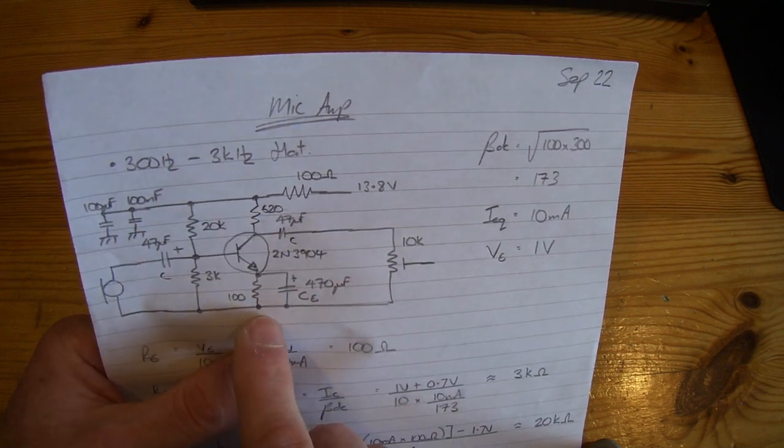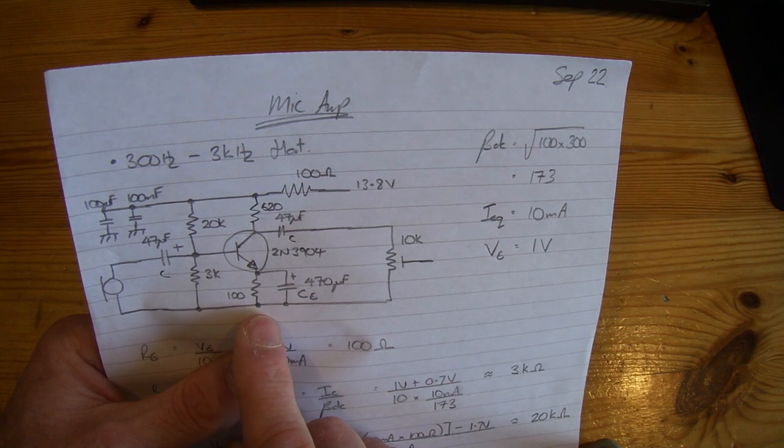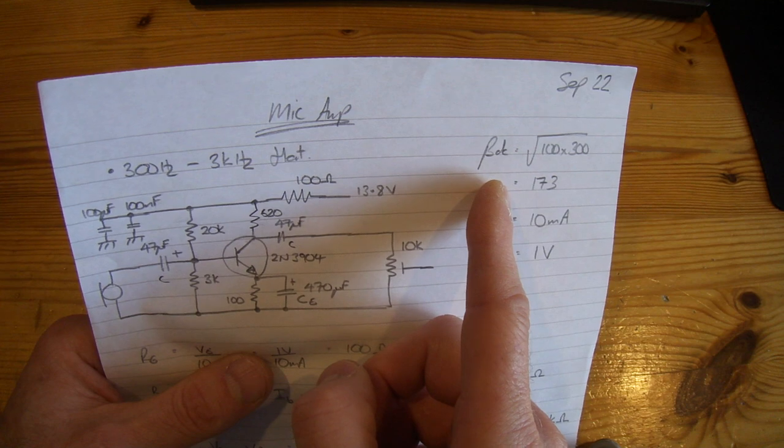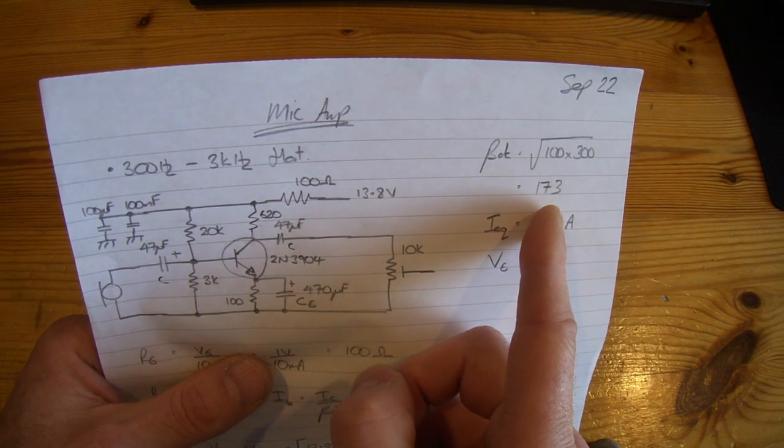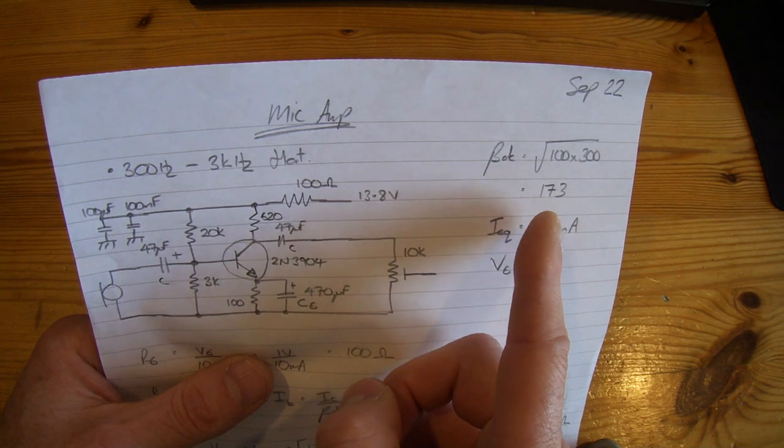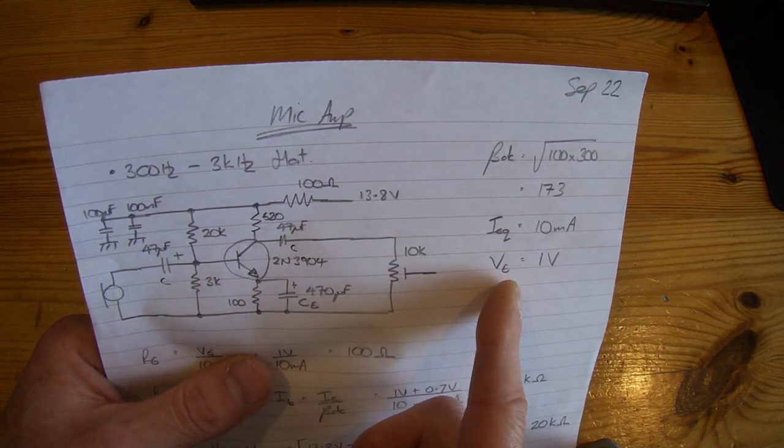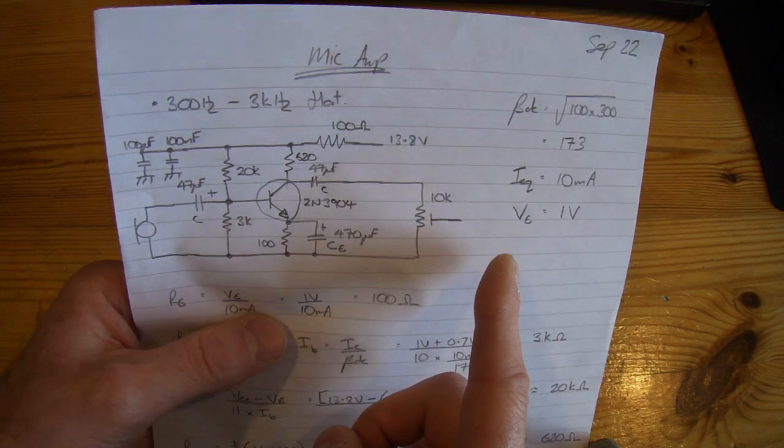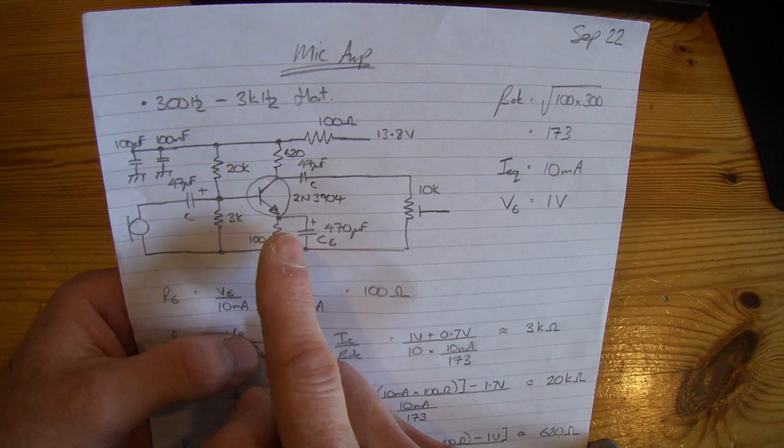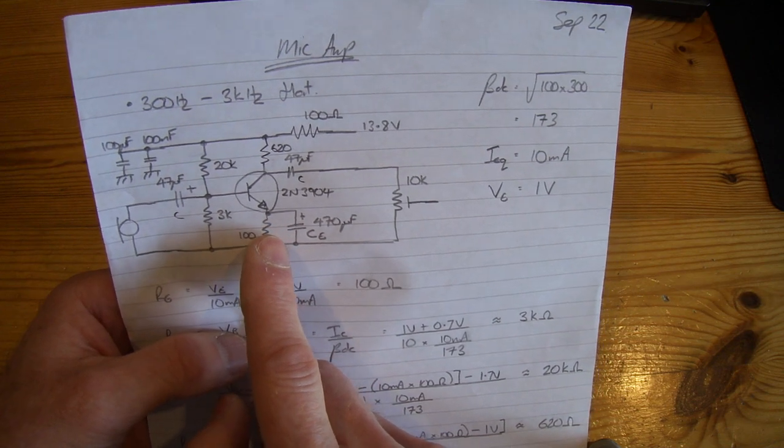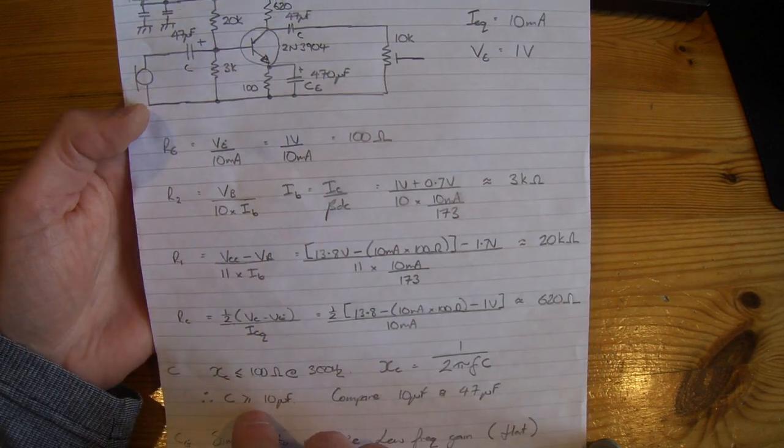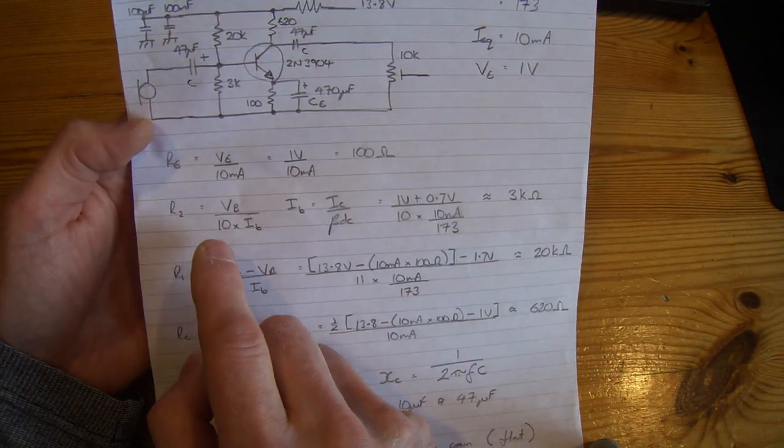I'm going to have a quiescent current through the device of 10mA, which gives us a βDC in terms of a geometric mean of the data sheet of 173. For this particular transceiver, I'm going to set the emitter voltage to be DC 1 volt. I won't go through the full calculations but exactly the same as last time.